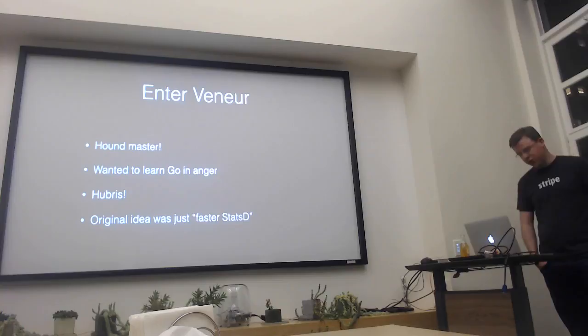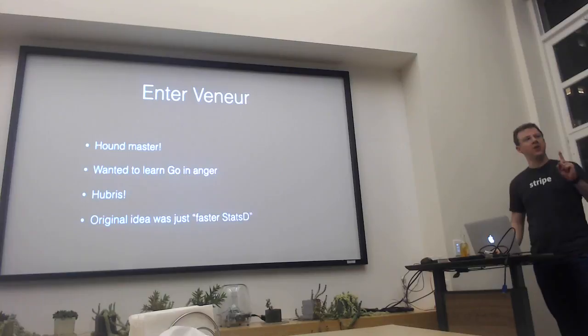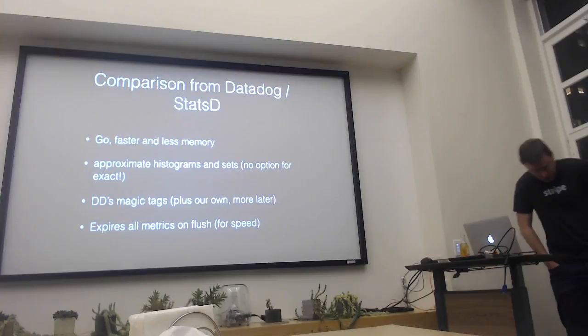I basically started hacking on this in the evenings — just sort of like, how does Go work, trying to make it do things. I can talk a bit about how to process lots of UDP packets. The answer on normal AWS instances is: don't. But you can if you add more ENIs, you can make them faster. Or if you happen to not run virtual machines, you can make them very fast. You turn on RPS and all kinds of other fun stuff.